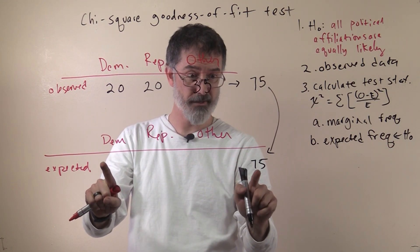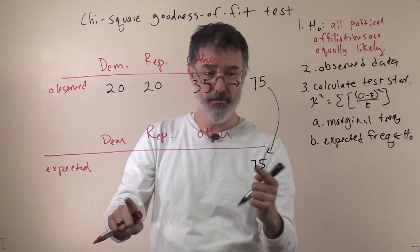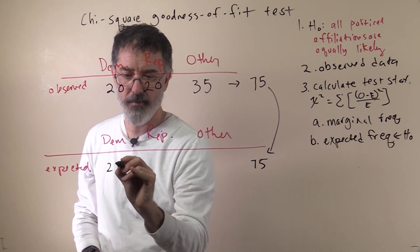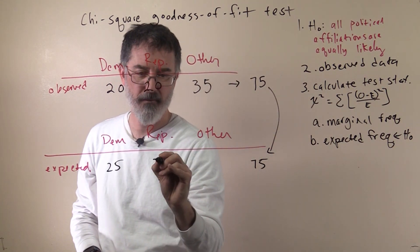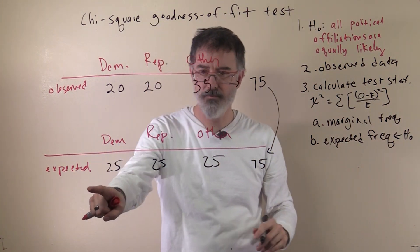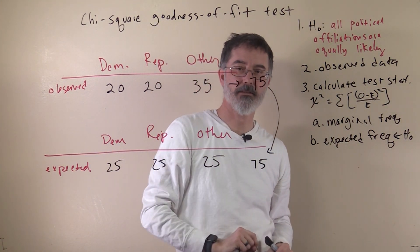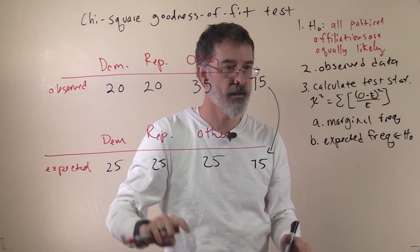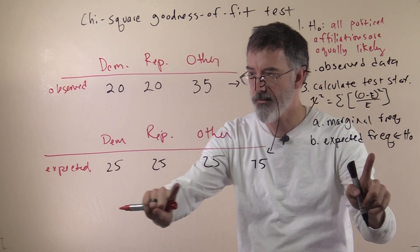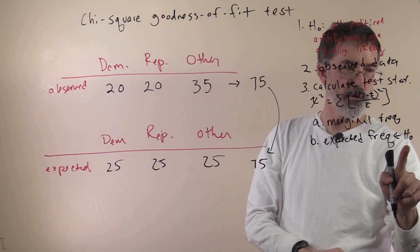We have to split this 75 equally three ways. That is pretty easy in this case — we just put 25 people in each group. These add up to 75 and they are equally likely. So these are the expected frequencies we would expect to see in our sample if the null hypothesis is true.